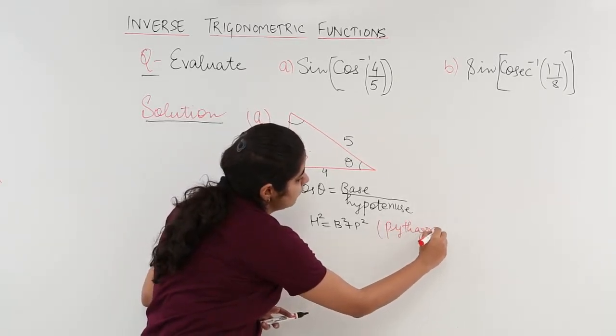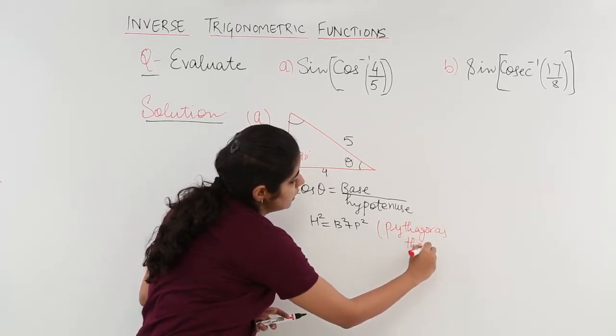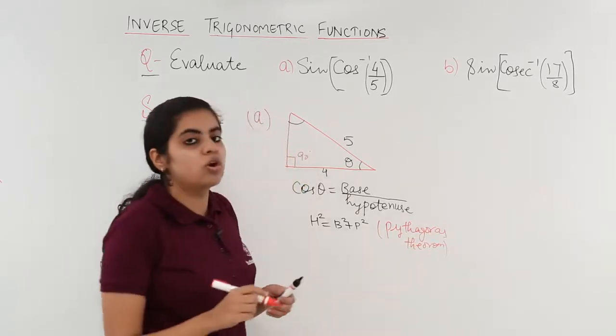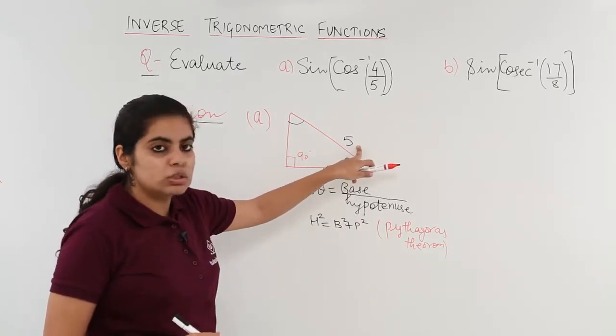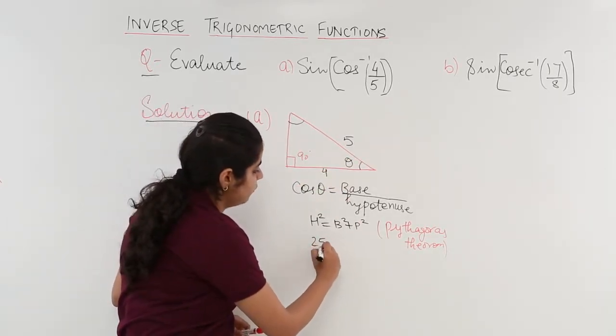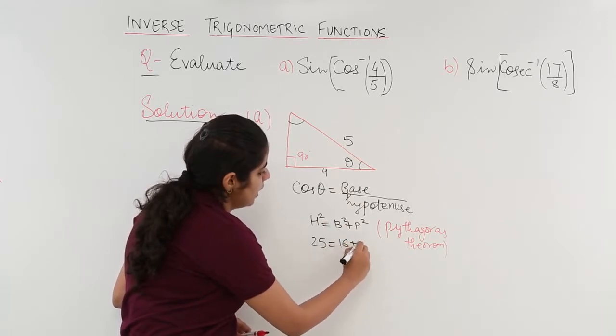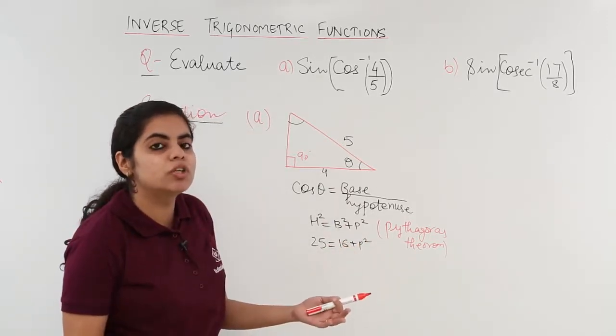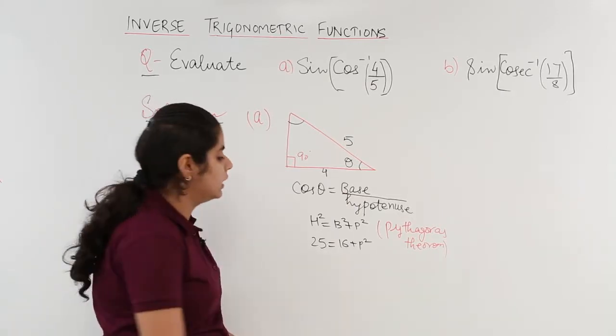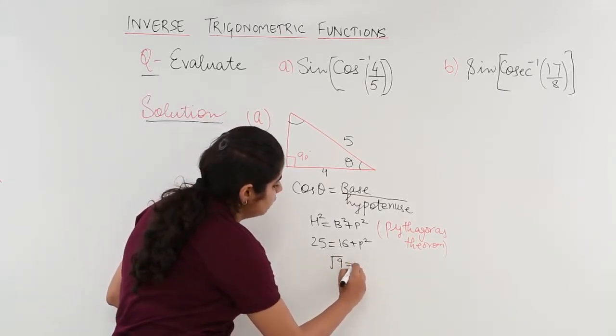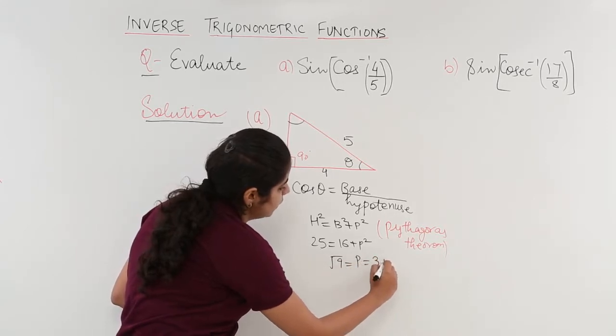Everybody knows this. Class 10th also had an application to this. Now, 5 square that means 25 is equal to base square plus perpendicular square. We do not have the knowledge of perpendicular. Let's find it out. 25 minus 16 is 9. Root of 9 is P which is equal to 3 units.